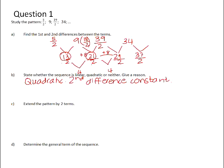34 add 37 over 2 is 105 over 2. And our next difference will be 37 plus 8, which is 45 over 2. And 105 over 2 plus 45 over 2 is 75. So the next two terms will be 105 over 2 and 75.